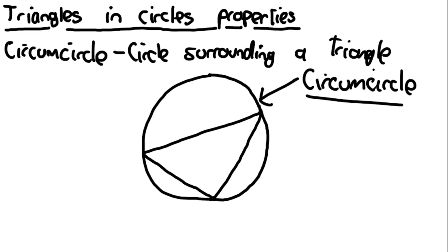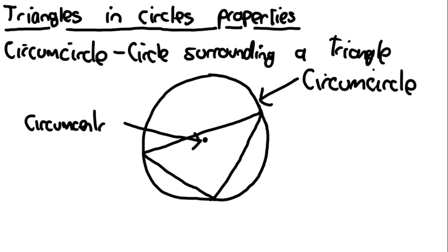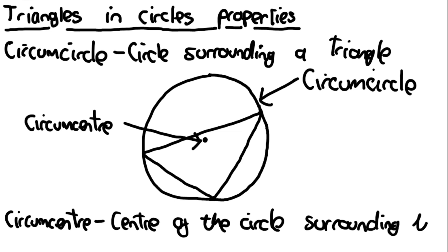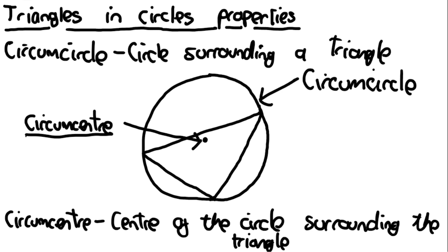The centre of this circle is known as the circumcentre. The circumcentre is just the centre of the circle surrounding the triangle. So if you ever see these two terms in a question, just know that the circumcircle is a circle that surrounds a triangle and the circumcentre is the centre of that circle.